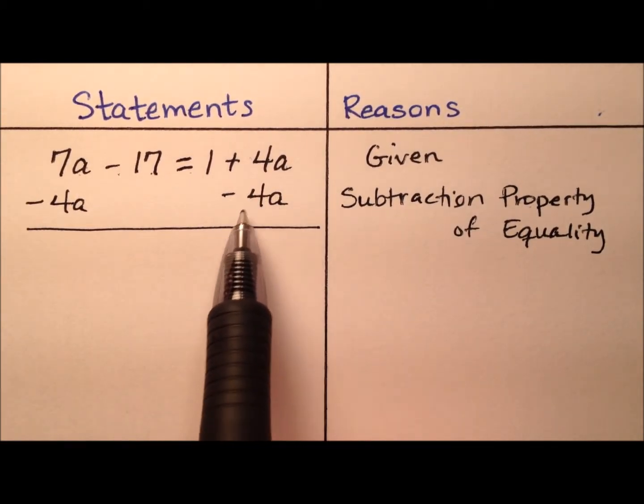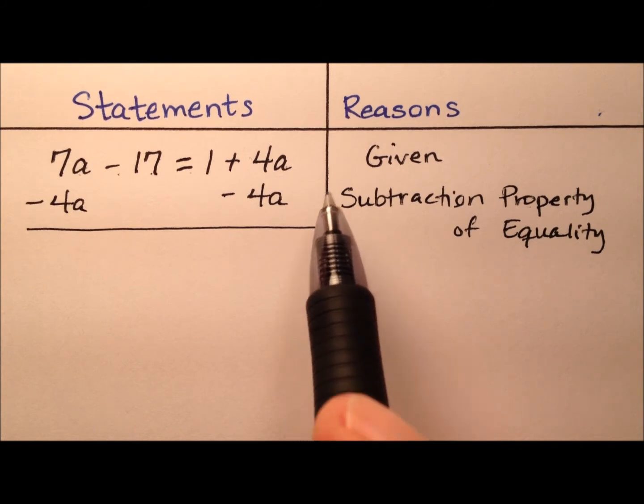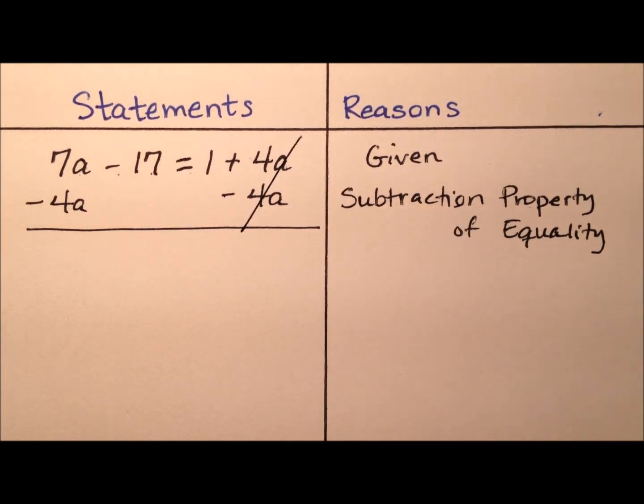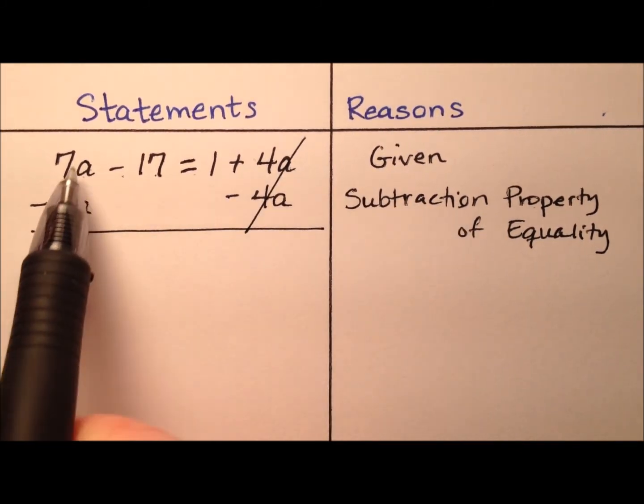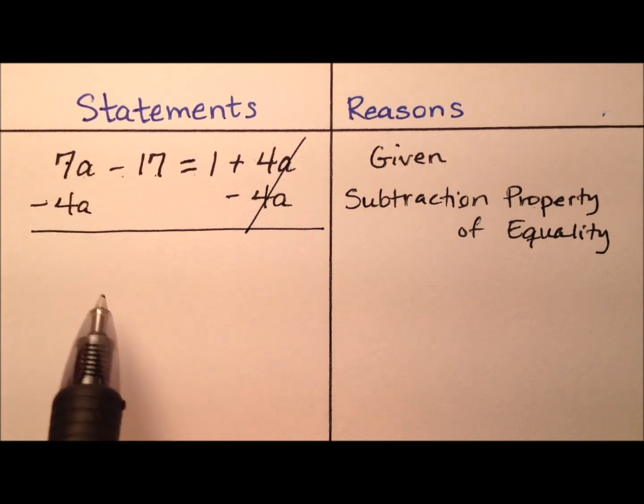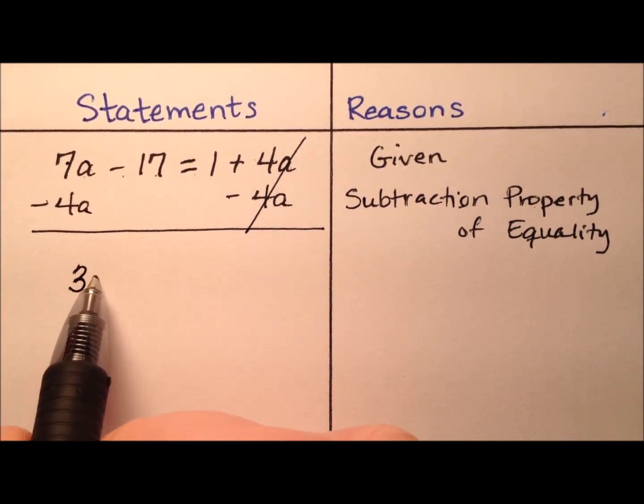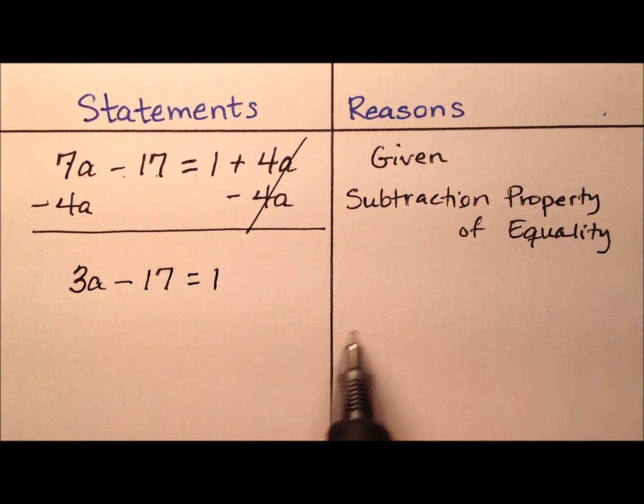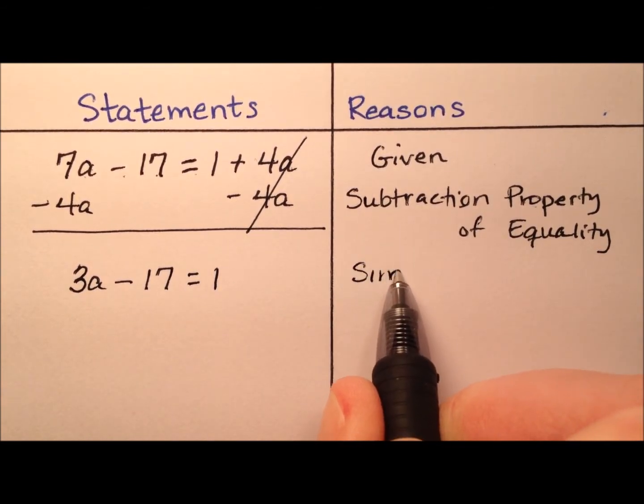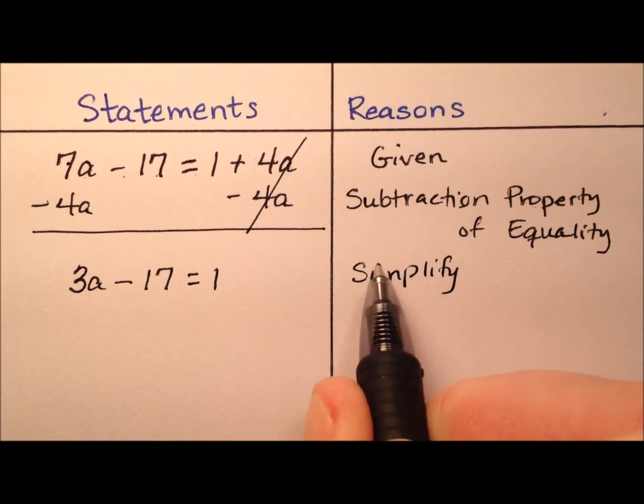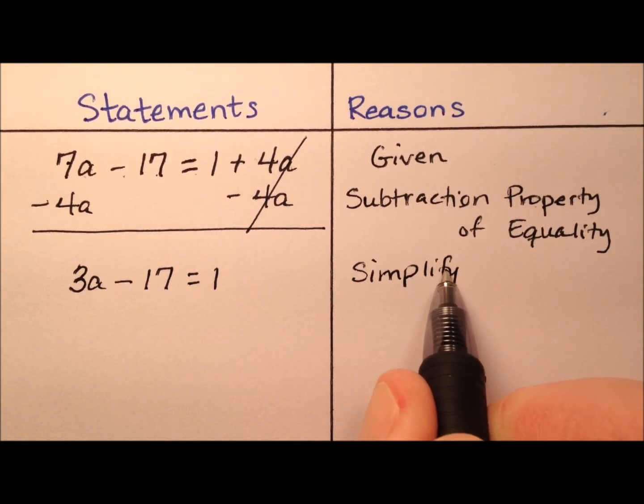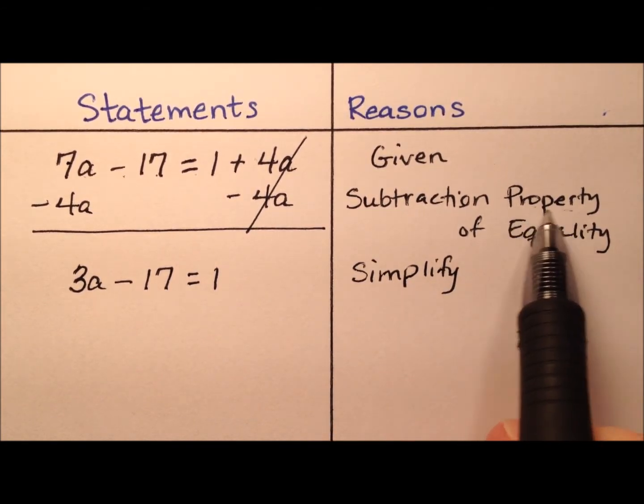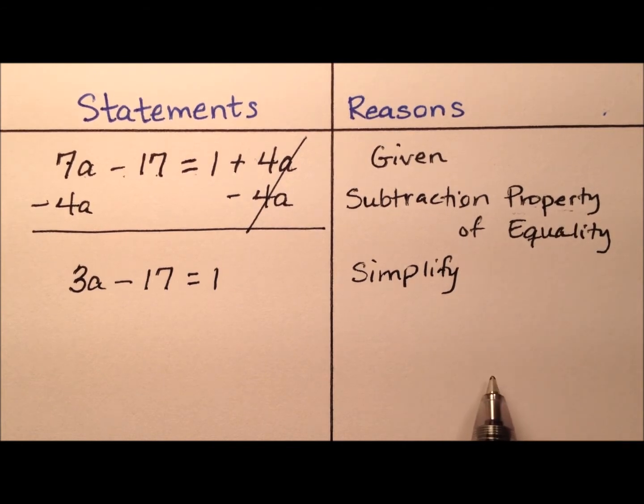What does this look like now when I subtract 4a from both sides? Well, on this right side, our 4a's cancel, and on the left side I have 7a minus 4a, which is 3a. So 3a minus 17 equals 1, and that step is just going to be simplify. You'll notice as you go through and do these, every time after you use a property of equality, you're always going to use a simplify.